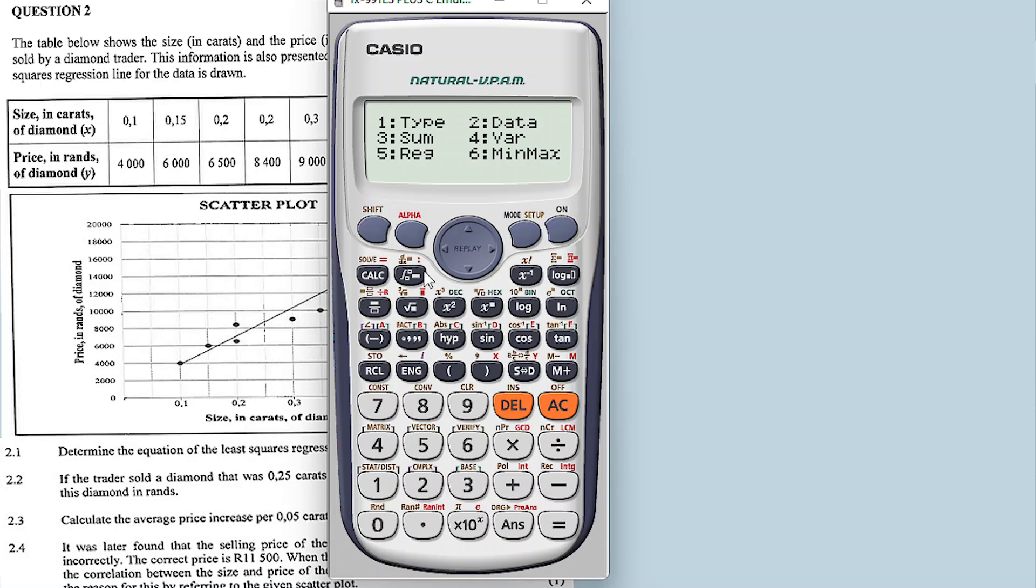So after inserting the information here, you can calculate your regression line by saying shift. If on a Casio calculator, you just say shift, stat number one, and then we have number five - reg, where it says regression, number five. Then you get a, a is equal to, in two decimal places, 6634.38.